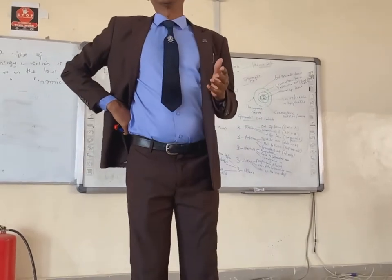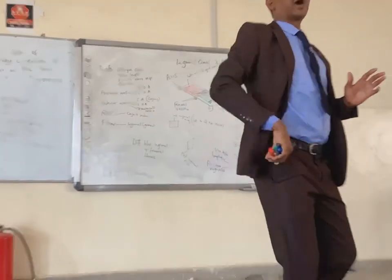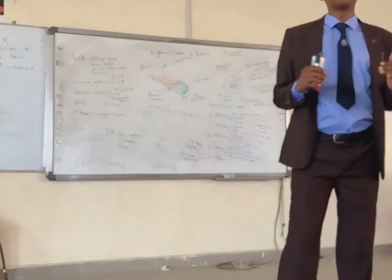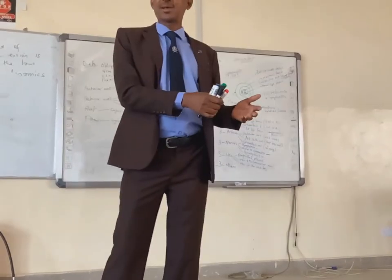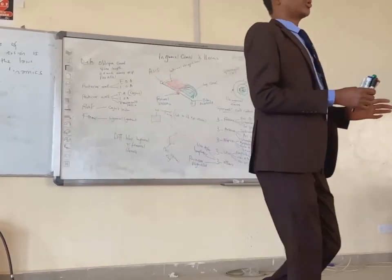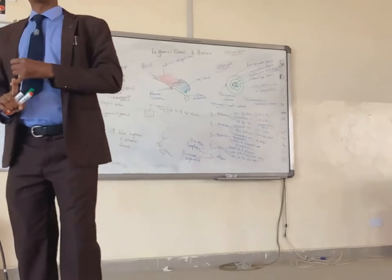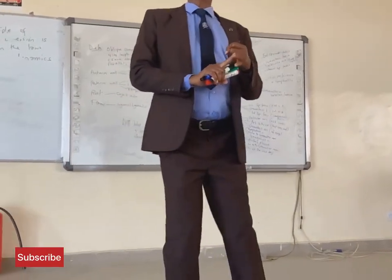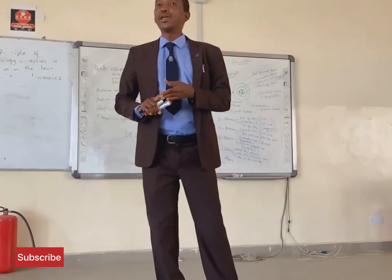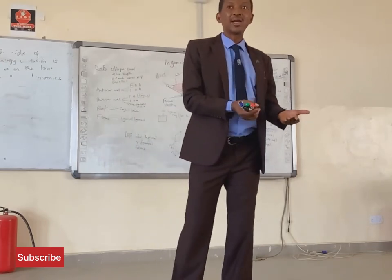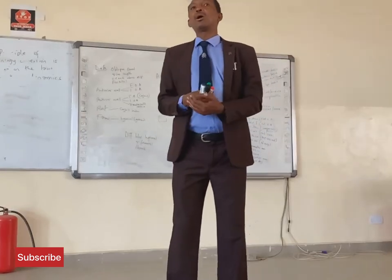Today we are going to discuss the inguinal canal and inguinal hernia. Last week we discussed the anterior abdominal wall, including its muscles and other layers. You can remember there were about six layers in the anterior abdominal wall: the skin, the superficial fascia made up of fatty and membranous layers, and the muscular layer, in which we discussed the three aponeuroses of the three muscles.